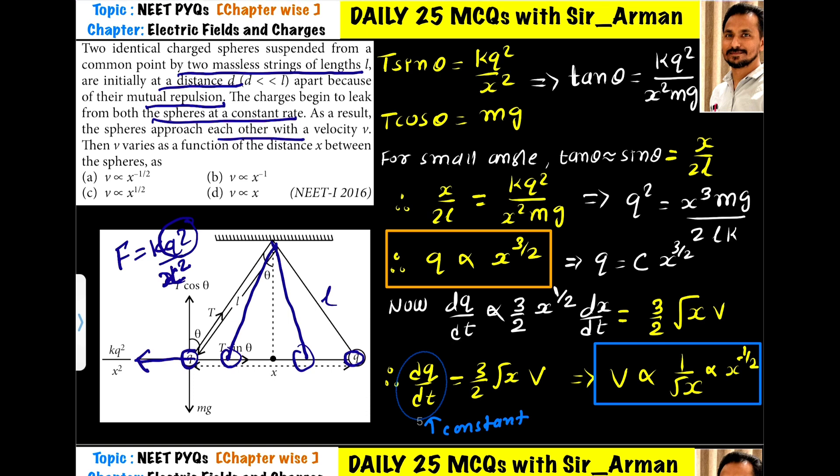They are moving with velocity v, but this velocity is not constant because at all points the charge decreases, so the repulsive force decreases. As the force decreases, we have variable force, which means variable acceleration, and variable acceleration means variable velocity. Here, velocity varies as a function of distance, and we have to find how it varies.